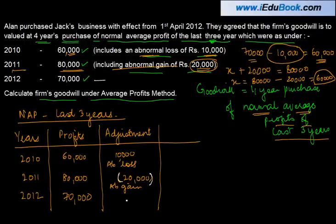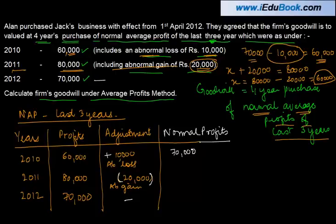For the third year we don't have any adjustments, so we leave it as is. So the normal profits are: 60,000 plus 10,000 = 70,000; 80,000 minus 20,000 = 60,000; and 70,000 plus 0 = 70,000. Total normal profits are 70,000 plus 60,000 plus 70,000, which equals 2,00,000.